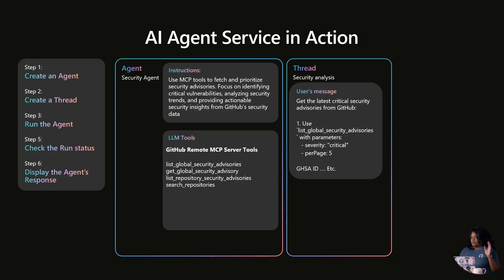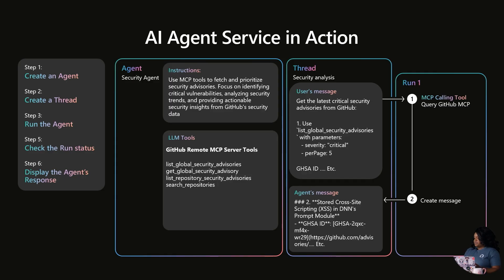It seems like there's a lot going on, but it's really going to help companies, and I really like how all the security is built in. The agent will create a thread where it gets that message and combines it with the MCP to actually give a response. Getting that right response is the key critical thing. We're going to list the tool to get those critical advisories, and our end result will be our agent message — it will run and create that message back to the user.